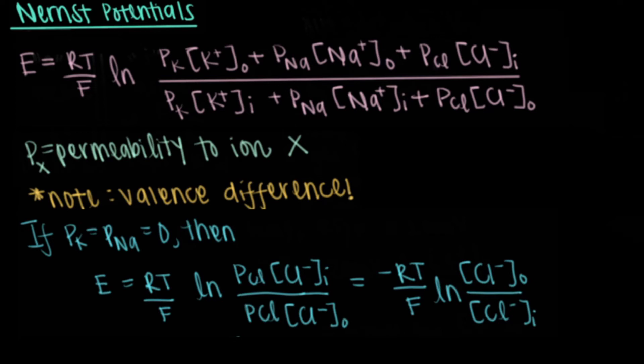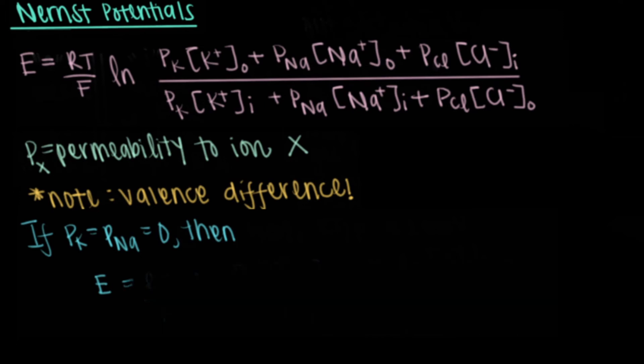We see that E equals RT divided by F times the natural log of the inside concentration divided by the outside concentration. If we wanted to, we could write this as negative RT divided by F times the outside concentration divided by the inside concentration as if we were using the value of negative one for N to account for the valence of chlorine.